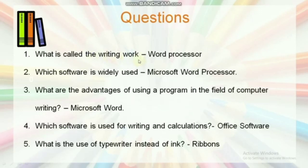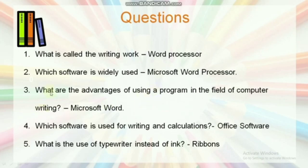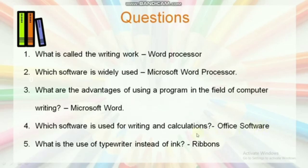Question: What is writing work called? Answer: Word processor. Which software is widely used? Answer: Microsoft Word Processor. What are the advantages of using a program in the field of computer writing? Answer: Microsoft Word. Which software is used for writing and calculations? Answer: Office software. What is used in a typewriter instead of ink? Answer: Ribbon.